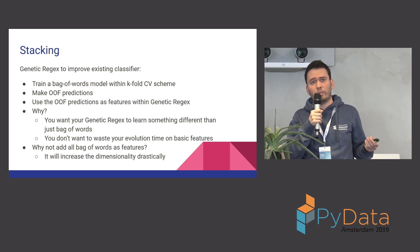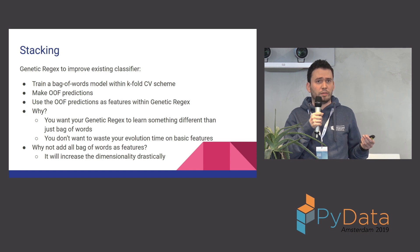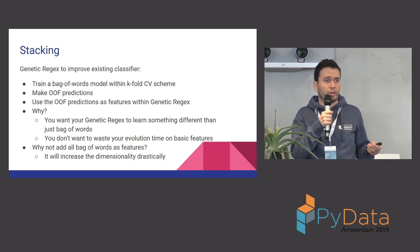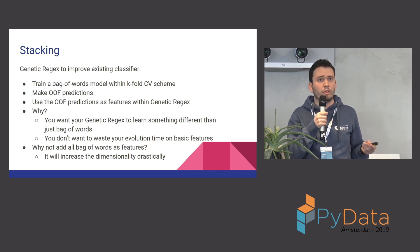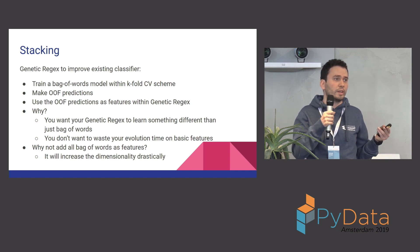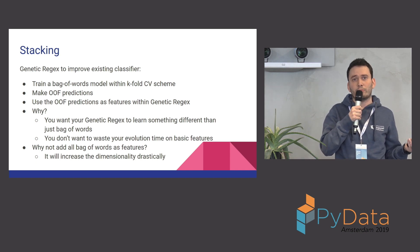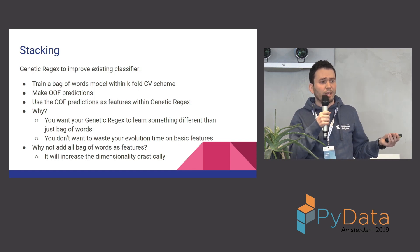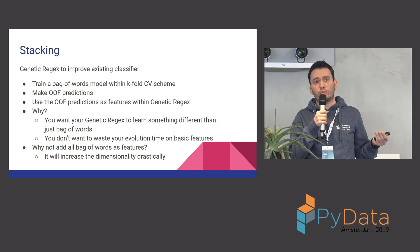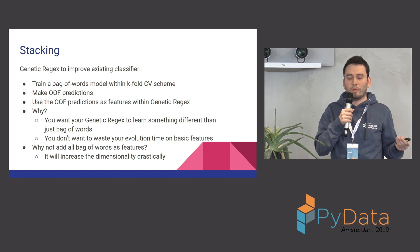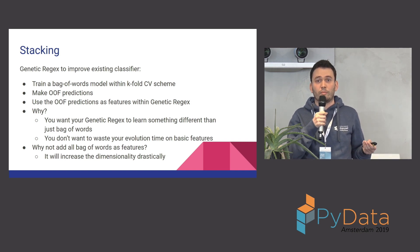For this, we follow a simple stacking architecture. We create out-of-fold predictions — it is very critical that they are out-of-fold within a cross-validation scheme. Here, cross-validation is actually not for validation purposes, but for training and prediction purposes. Using these out-of-fold predictions as features, we can create regular expressions which are different from what you can generate from word n-grams or other features.